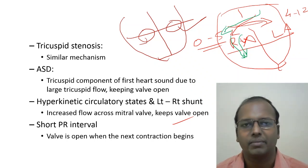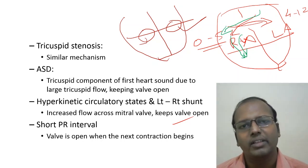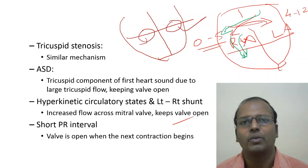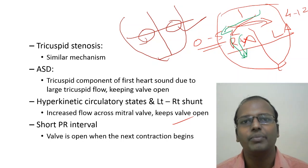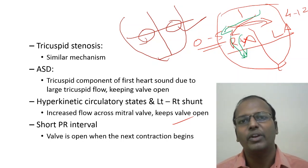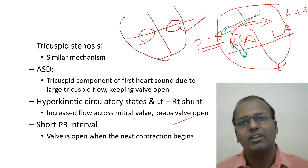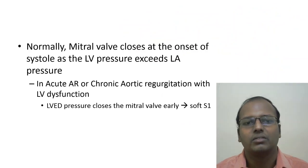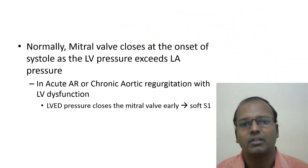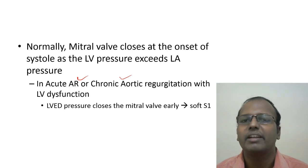Short PR interval means atrial contraction is quickly followed by ventricular contraction, leaving less time for the valve to reach a semi-closed position before ventricular systole begins. Therefore, the valve is still wide open when systole commences, producing a loud S1. In aortic regurgitation, blood regurgitates into the left ventricle during diastole, increasing left ventricular diastolic pressure, causing early mitral valve closure, resulting in a soft S1.